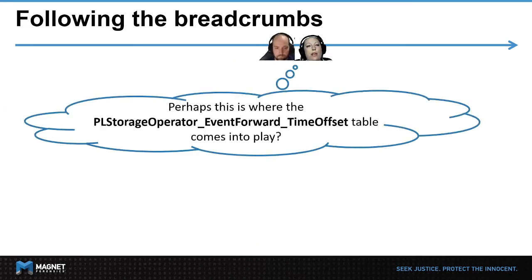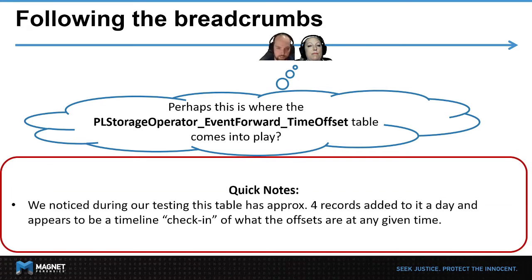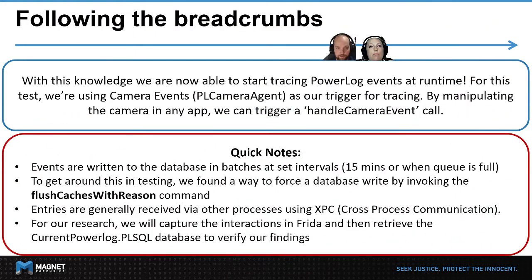This is where we started wondering that perhaps the PL_storage_operator_event_forward_time_offset table that is in the current Powerlog database must come into play. We noticed during our testing that this table gets populated about four times a day with very minor changes to the offsets — almost like a time check-in of what those offsets are at any given time. Another way rows get added is when you change the device time manually, and in a future slide we cover exactly how that looks.